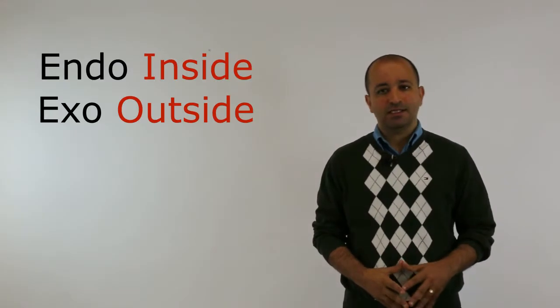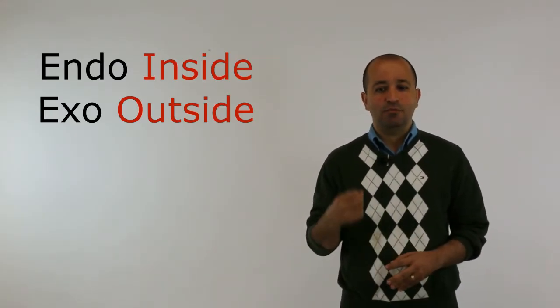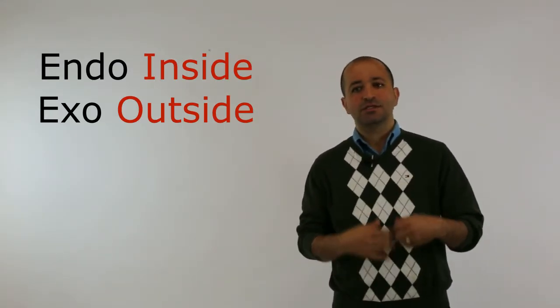What is the difference between endocrine glands and exocrine glands? The name tells you: endo means inside, exo means outside.